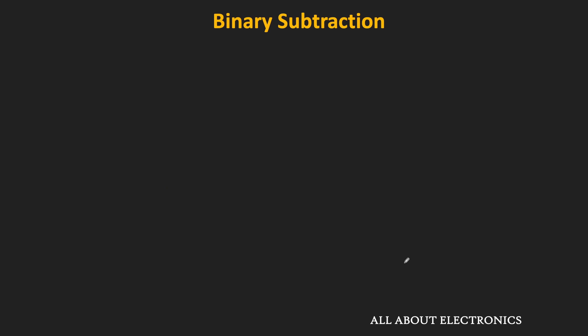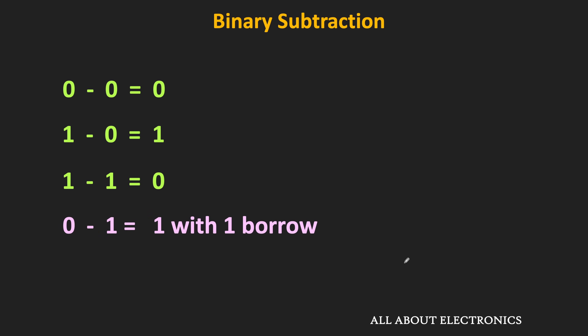Now let us see binary subtraction. Following are the rules: 0 minus 0 is equal to 0, 1 minus 0 is equal to 1, 1 minus 1 is equal to 0, and 0 minus 1 is equal to 1 when 1 is borrowed from the next column. In this last case, since 0 is less than 1, we cannot subtract 1 from 0, so we need to take a borrow from the next column. These are the binary rules for column by column subtraction.